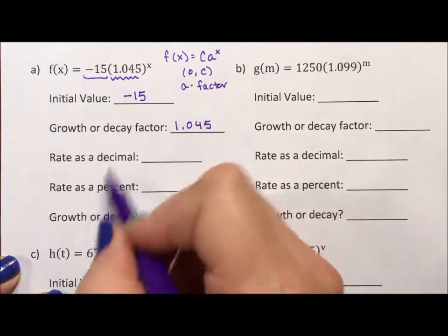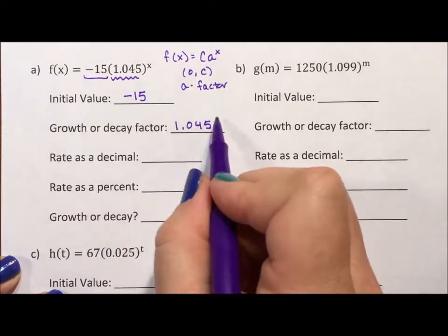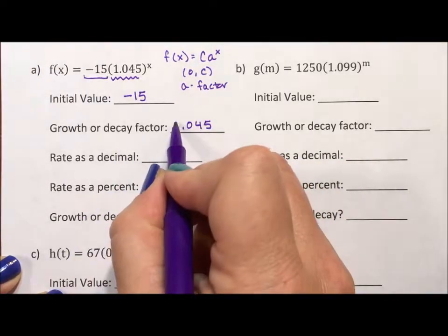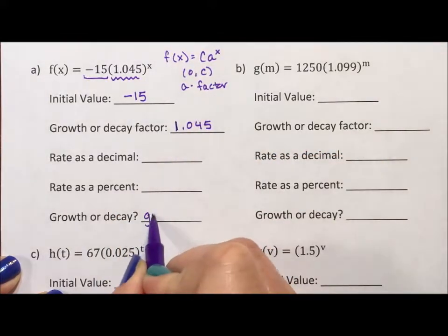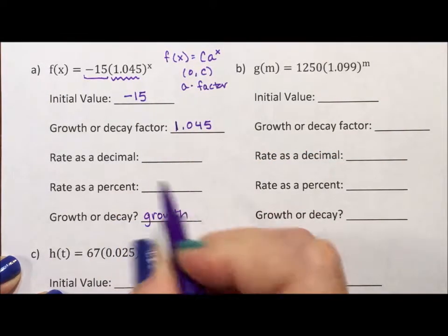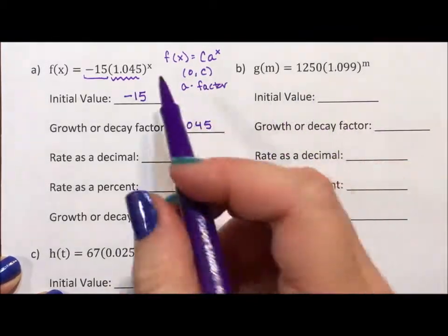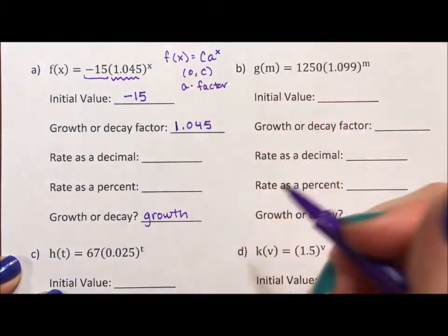From there, we can figure out growth or decay based on this factor. If the factor is greater than 1, it's growth. Because you're multiplying by something bigger than 1, the number is going to get bigger. If it's zero point, then it's going to be decay.